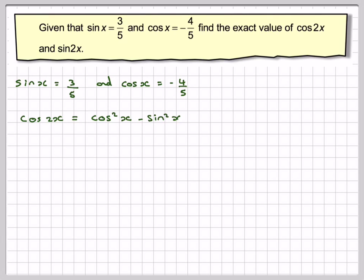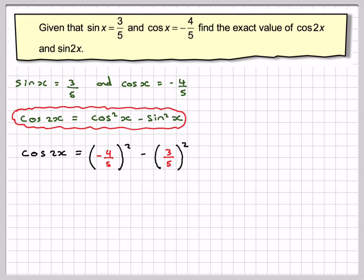So cos 2x will be equal to cos squared x minus sine squared x, using that identity for cos 2x. So cos 2x is going to be equal to minus 4 fifths squared minus 3 fifths squared.